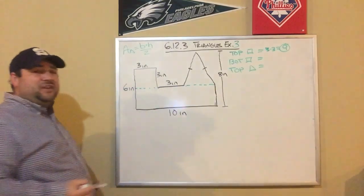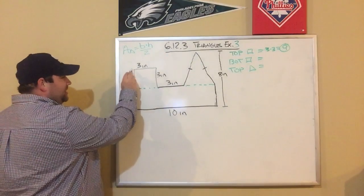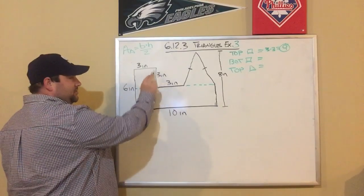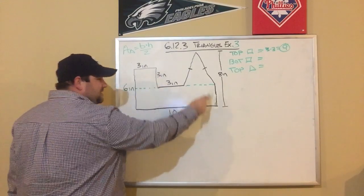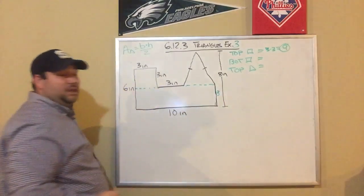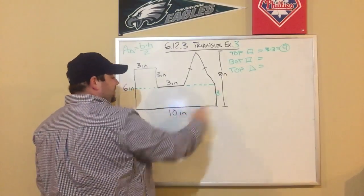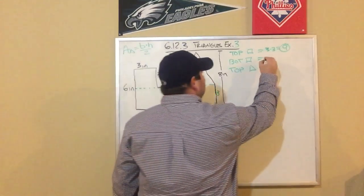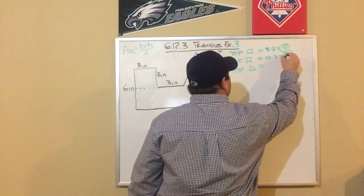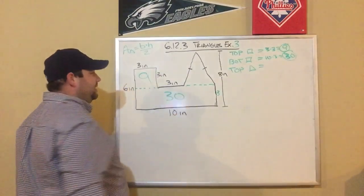Now let's look at the bottom rectangle. I can see the base is 10, but I don't know the height. I can see from here to here is 6 — that was given — and from here to here is 3. So the height is 6 minus 3, which is 3. The bottom rectangle area is base times height: 10 times 3, which is 30.